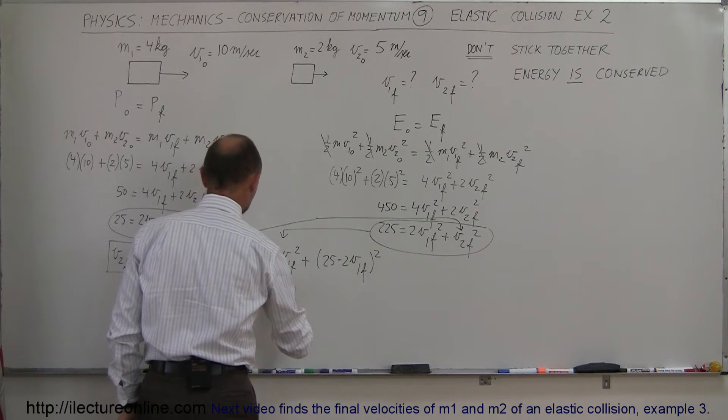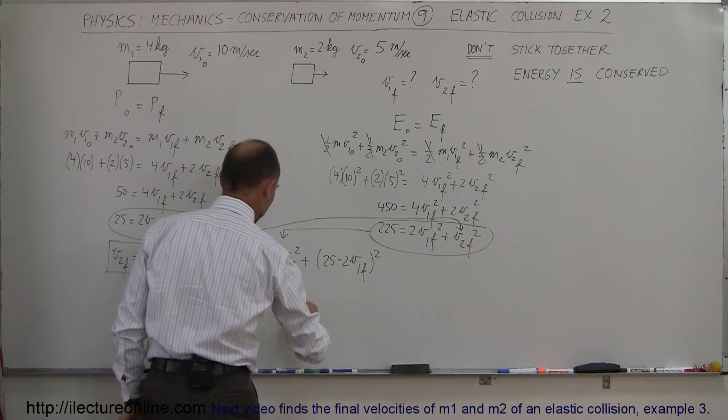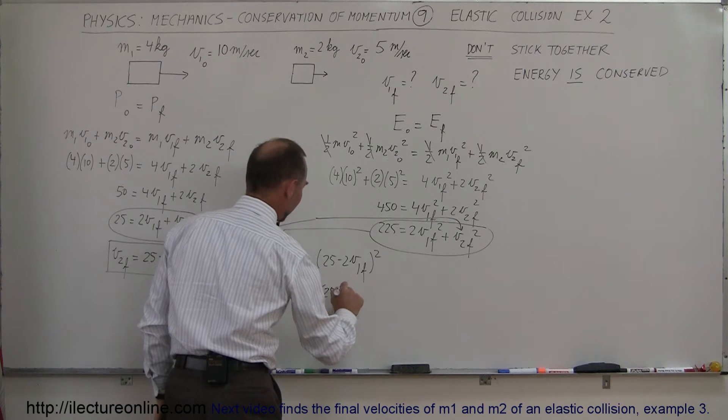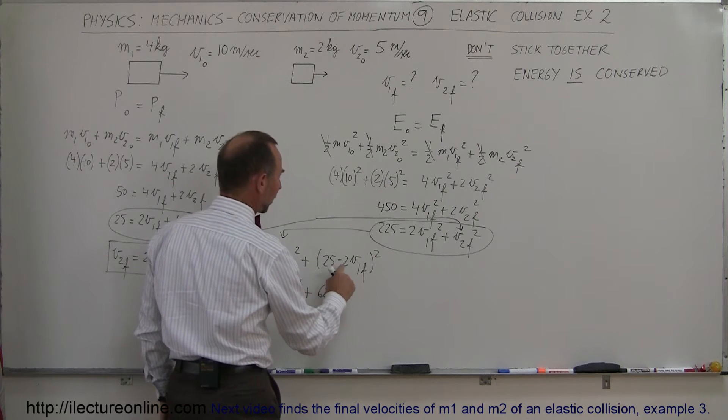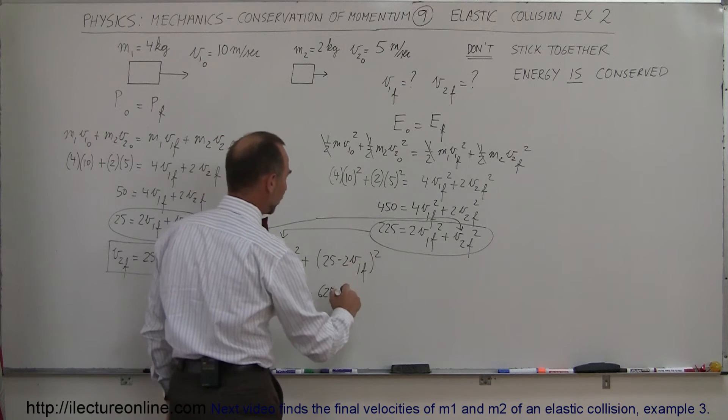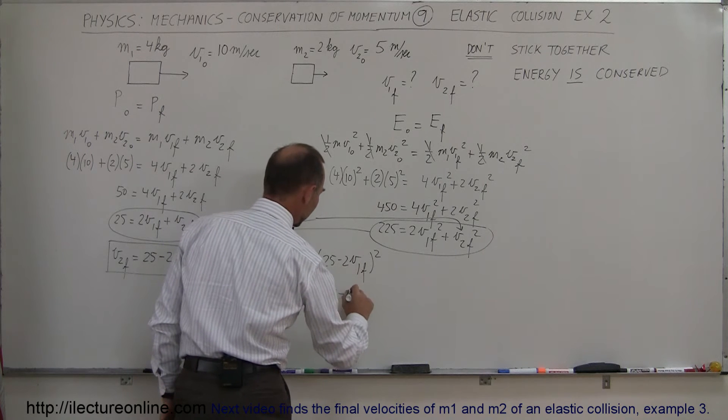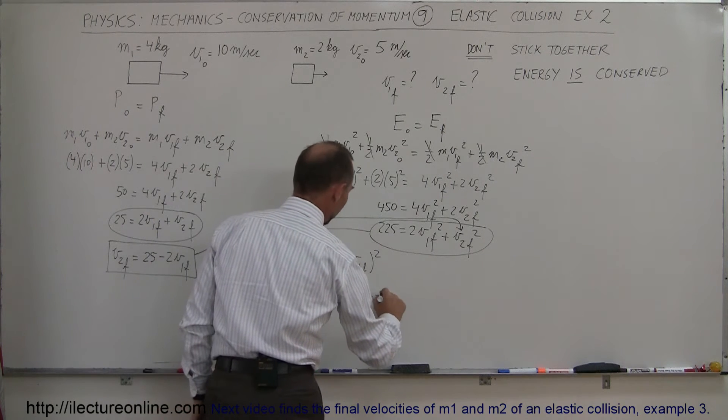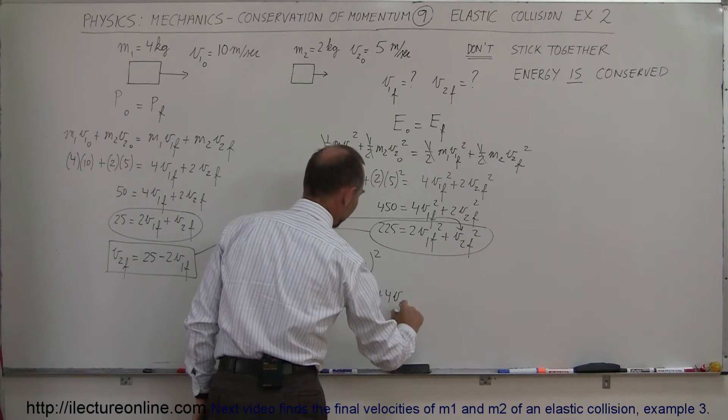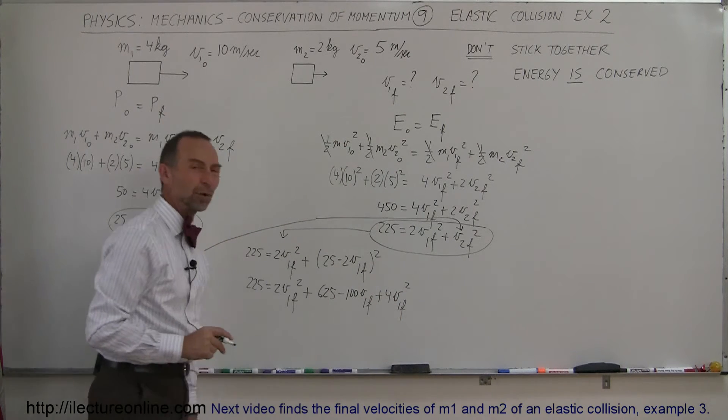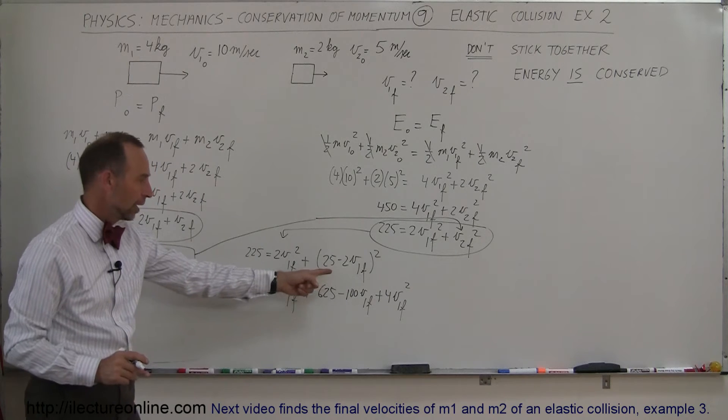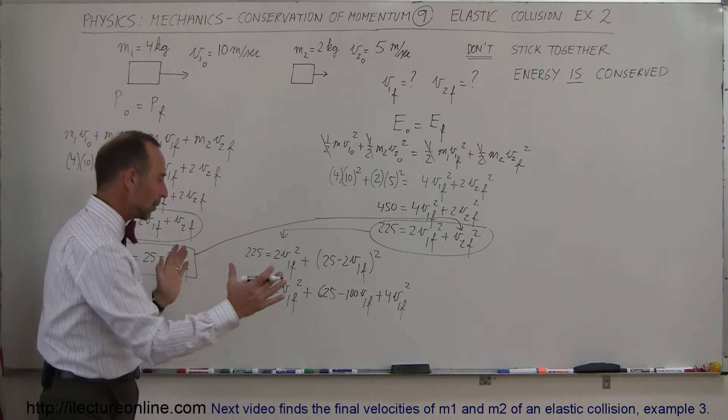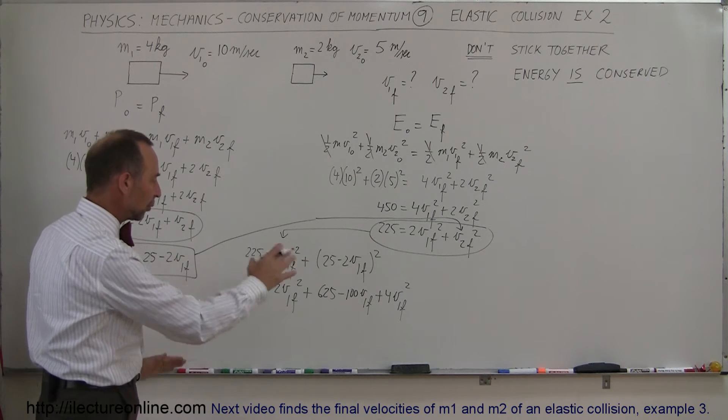So we have 225 equals 2 V1 final squared plus 25 squared is 625, twice the product of those two, that's 2 times 25 is 50, times 2 is 100, we still have the minus, so minus 100 V1 final, and finally the last term squared plus 4 V1 final squared. So that's how we square a binomial, is the first term squared plus the last term squared plus twice the product of the two.